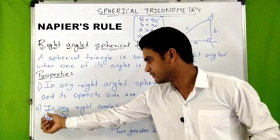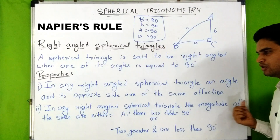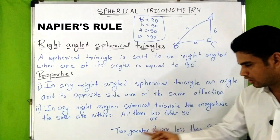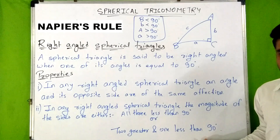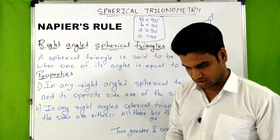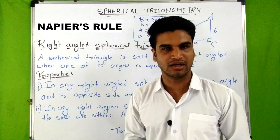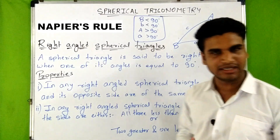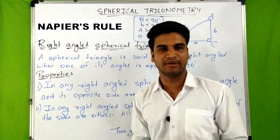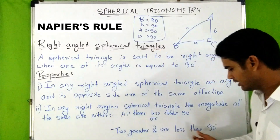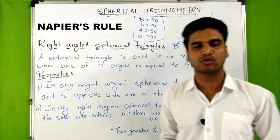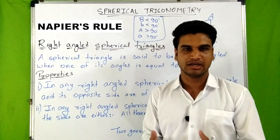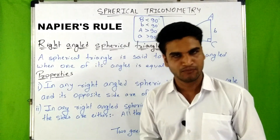The second property: in a right-angled spherical triangle, the magnitude of the sides are either all three less than 90 degrees, or two are greater than 90 degrees and one is less than 90 degrees. That was a brief about right-angled spherical triangles. Now let's see how we use Napier's Rule on right-angled spherical triangles for numericals.